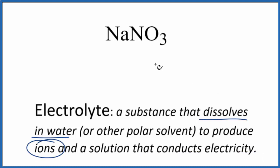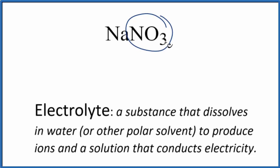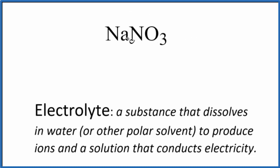For sodium nitrate, we know that sodium is a metal, and the nitrate group is a group of nonmetals — a polyatomic ion. So we have a metal and nonmetals, giving us an ionic compound. If you know your solubility rules, ionic compounds with sodium are very soluble, so it's going to break apart into its ions.